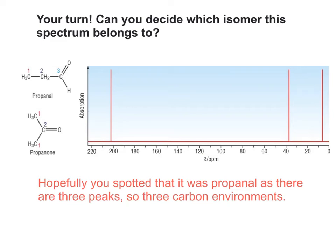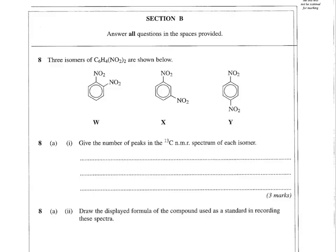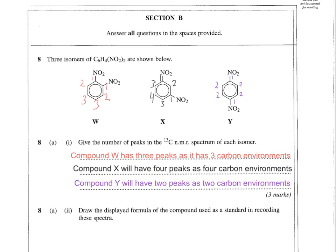I think it's time to try a short exam question before we wrap things up on this clip. Here's a typical exam question getting you to look at disubstituted nitrobenzenes. You've got 1,2-dinitrobenzene in compound W, 1,3-dinitrobenzene is compound X, and 1,4-dinitrobenzene is compound Y. It asks you to give the number of peaks in the carbon-13 NMR spectrum of each isomer. Looking at compound W, you have three peaks as it will have three carbon environments.